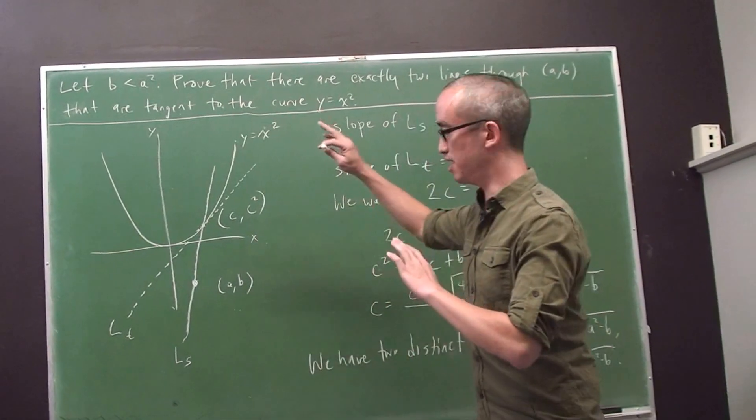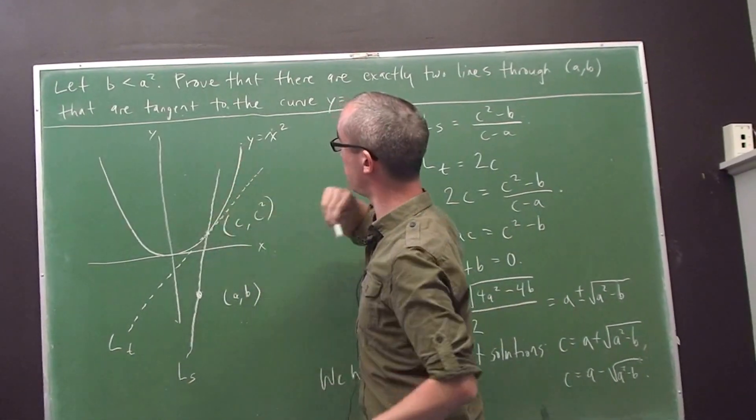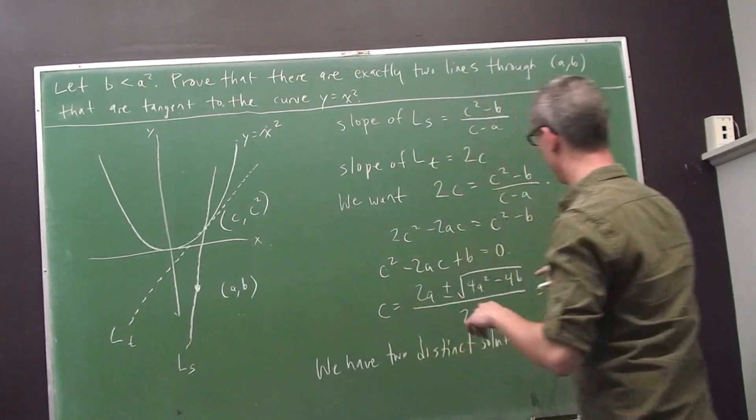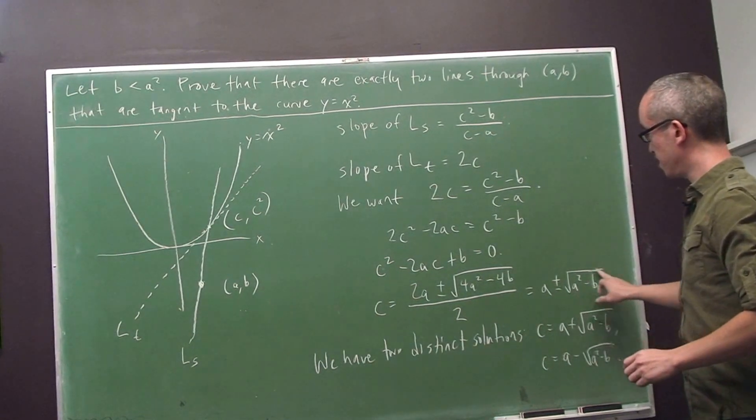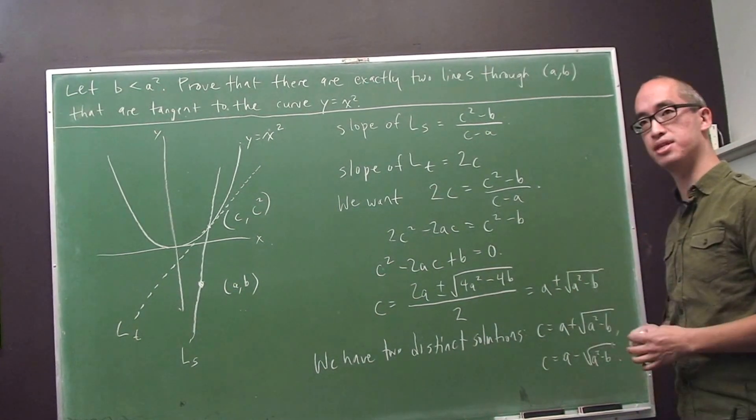Lastly, if b were larger than a², then this point would be above the parabola. And for a point above the parabola, we would expect there to be no tangent lines. And indeed, if b were bigger than a, then the thing underneath the square root sign would be negative, and we would have no real solutions for c.